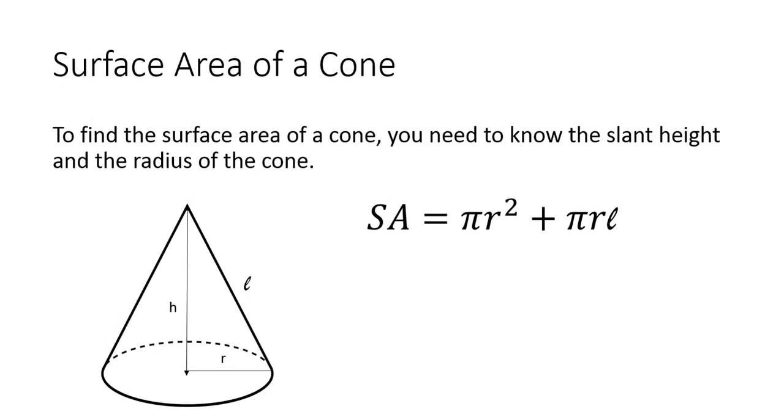Next, to find the surface area, you need to know the slant height and the radius of the cone. The slant height is along the edge here, and it's usually denoted with a cursive L.